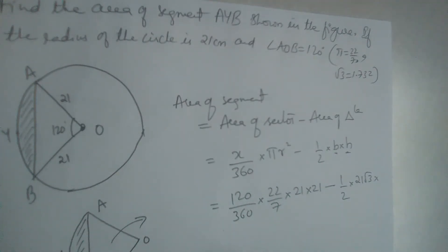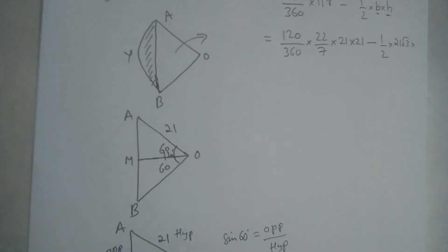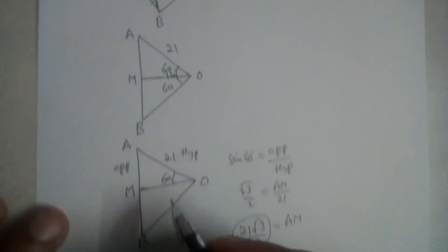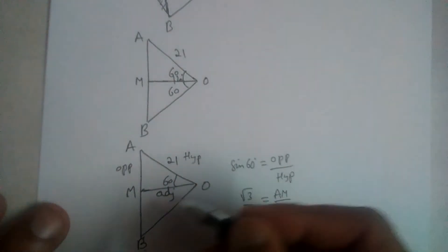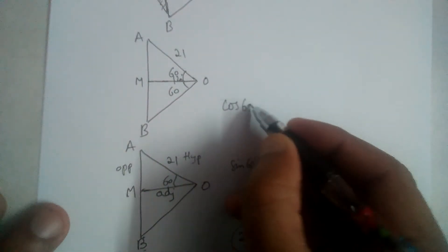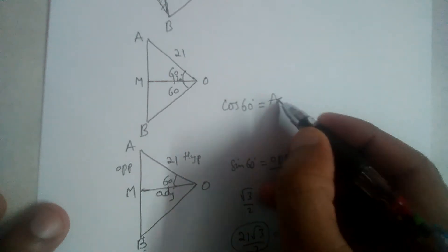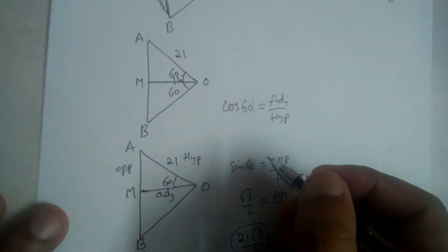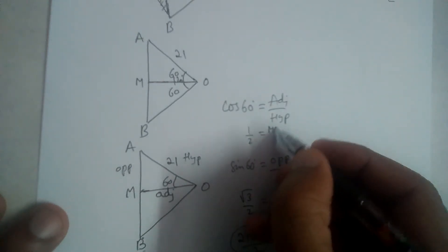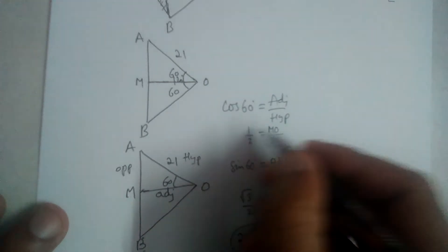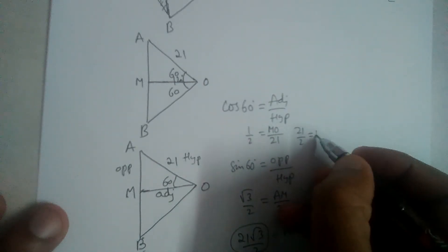Now we should find height. Let OM, so take the same triangle again, OAM, and to angle 60, OM is the adjacent side and hypotenuse side is given. So adjacent and hypotenuse will come in cos formula. So cos 60 degrees is equal to adjacent by hypotenuse. Cos 60 is 1 by 2, adjacent is not known, let it be MO, divided by hypotenuse 21. So 21 goes on the other side, 21 by 2 will be MO.